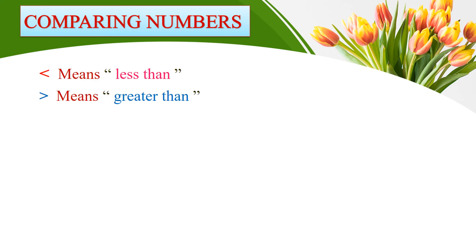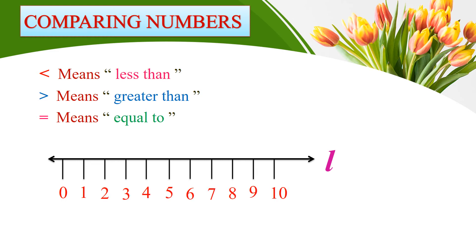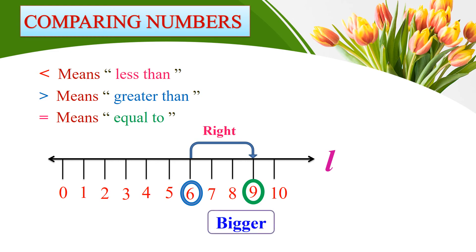Comparing numbers: the less-than symbol, the greater-than symbol, and the equal-to symbol. Draw a line called L and write numbers at equal distances from zero to ten. Take 6 and compare with 9 — moving towards the right means values are increasing, so 9 is bigger than 6. Take 3 and compare with 6 — moving towards the left, so 3 is less than 6.